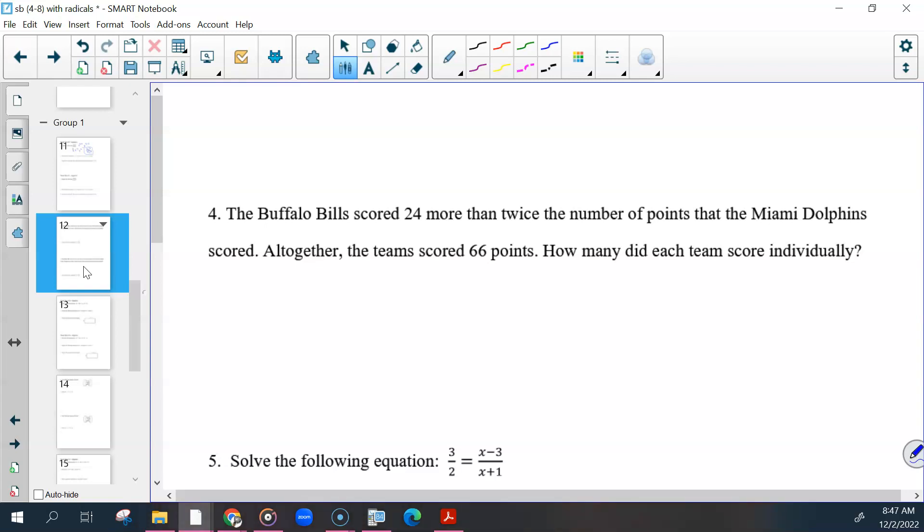So for this word problem, very similar to the word problems from the test that we just took. Buffalo Bills scored 24 more than twice the number of points Miami Dolphins scored. Altogether, the teams scored 66 points. How many points did each team score individually? So you need two variables to find them. Let's define them.